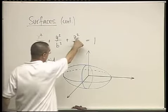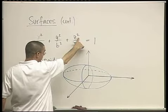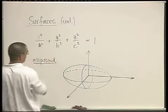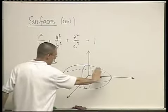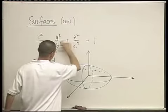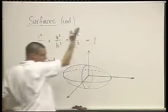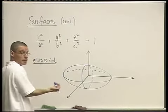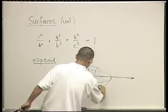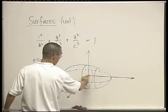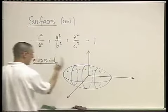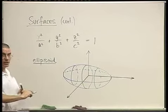Now if you take, for example, x = 1, you're going to be in the yz plane at x = 1, so a bit forward towards you. You'll have y²/b² + z²/c² = 1 minus some constant, so you get an ellipse — just a bit more to the front. There's going to be an ellipse here for y = 1, and another one for y = −1 or −3.